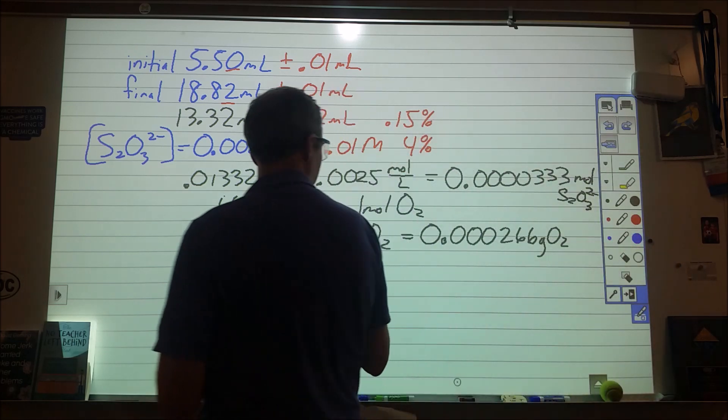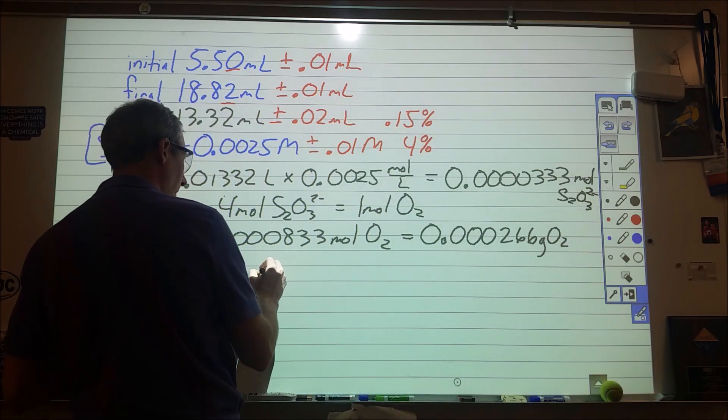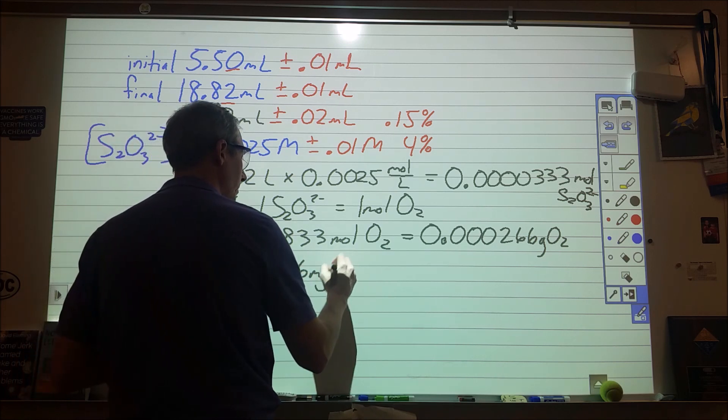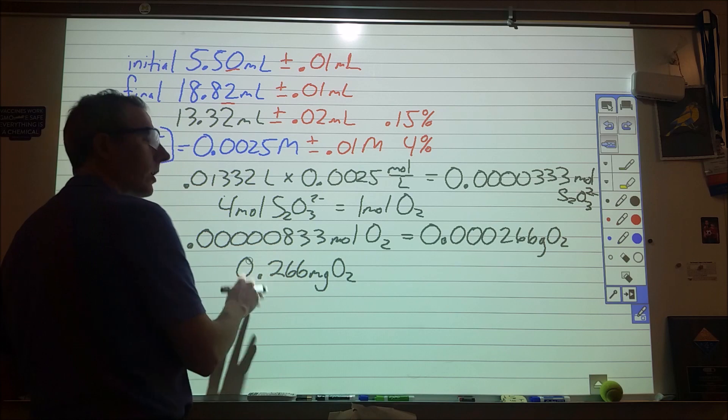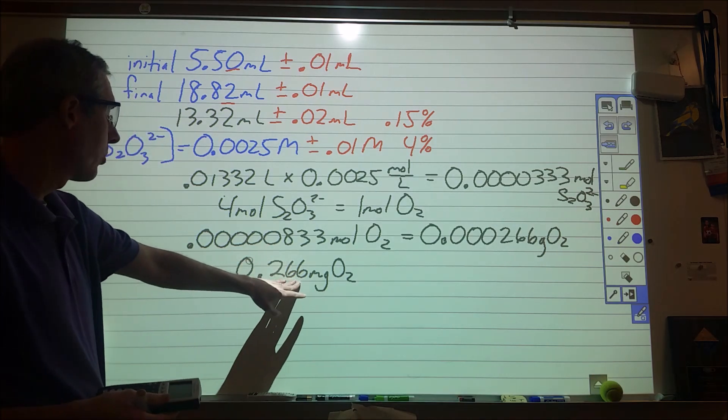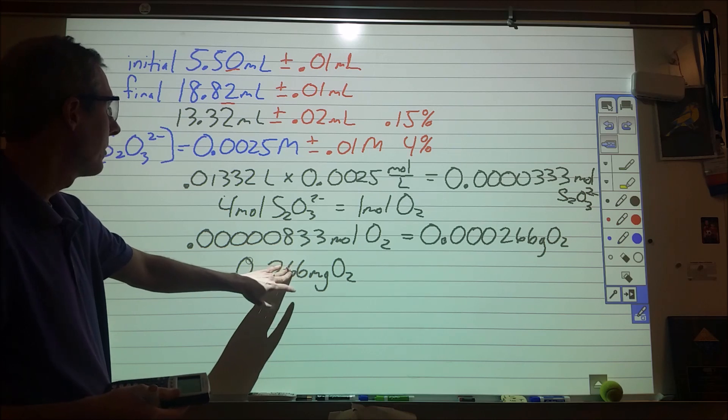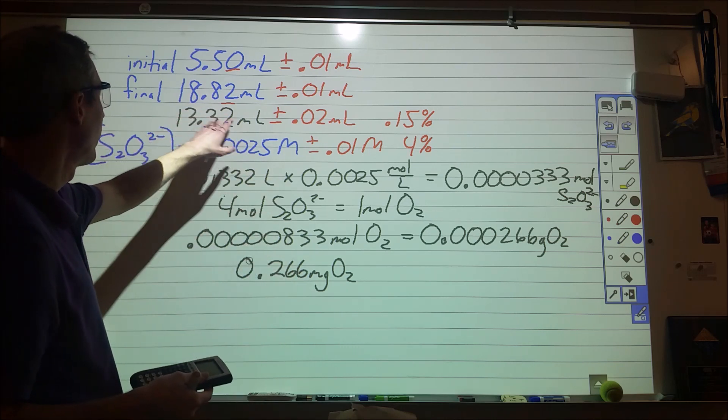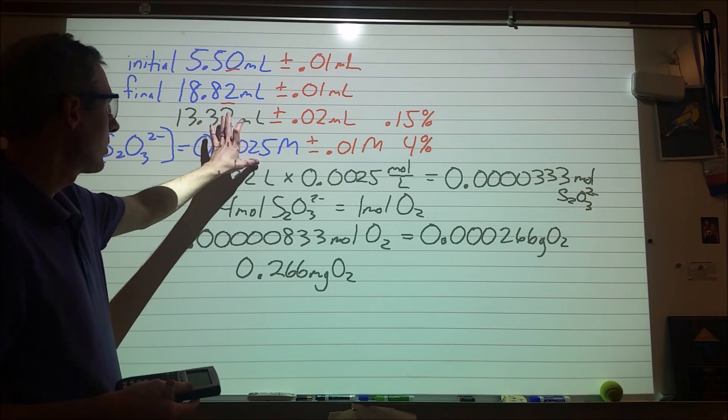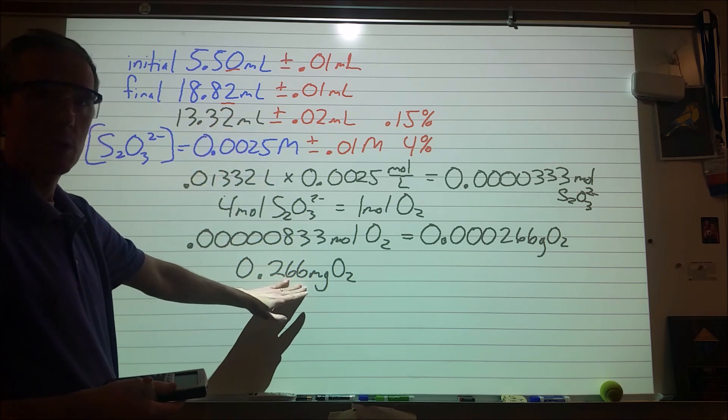We can take that one step further and put that into milligrams, where it would be 0.266 milligrams of O2. So let's assume we're going to stop there and that's our answer. We're not going to put this into a concentration. At that point we would then go through and say, okay, well how many sig figs should this have? We started with four here and two here, so since we're doing multiplication and division, we should be rounding this to two sig figs.